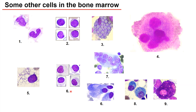Number six: we do have elongated cells where at one edge we do have the very dense nucleus — these are the osteoblasts. In the multinucleated cells, these are the osteoclasts.